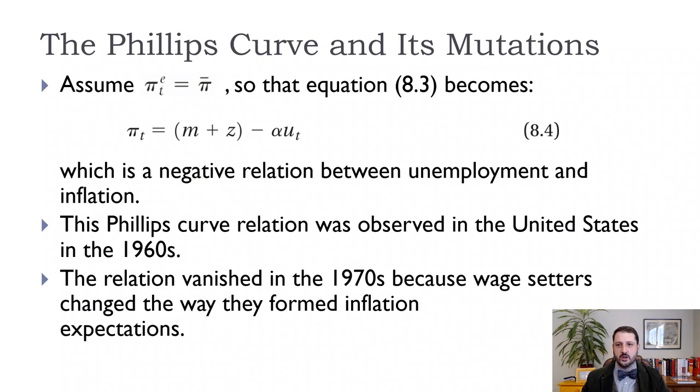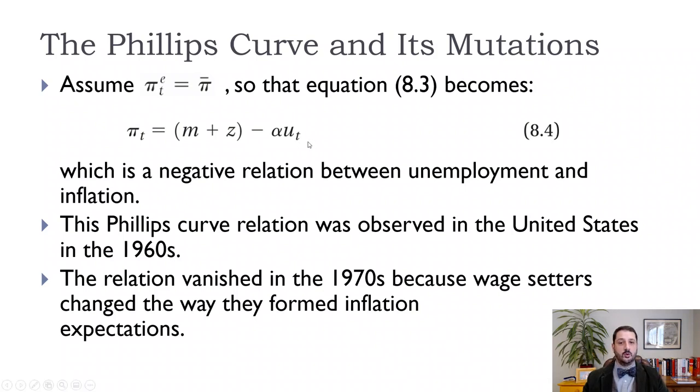Edmund Phelps and Francesco Modigliani both said in the late 1960s that the Phillips curve was somewhat illusory because it didn't take into account people's expectations. As soon as people's expectations changed, the relationship between unemployment and inflation changed. The key variable is expected inflation. The original Phillips curve didn't have expectations in it, so expected inflation was essentially treated as zero or some fixed number — not changing — and unemployment was the main variable of interest.